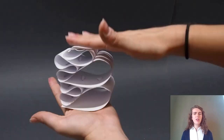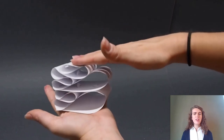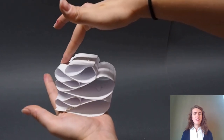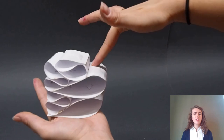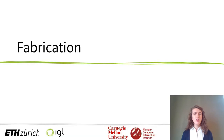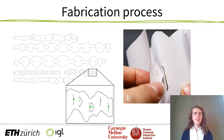Besides allowing the creation of volumetric objects from flat sheet, it also enables us to control its local compliance by changing the ruffle density. For instance, the left side of this object is much stiffer than the right side. Our second contribution is a fast fabrication process without any external material such as glue. The ruffles are flattened and cut using a laser cutter, and connections are produced using interlocking connected tabs cut directly into the sheet, making assembly a quick process.